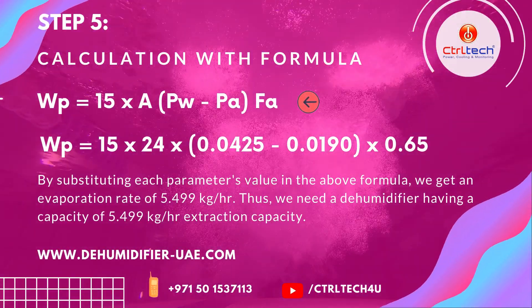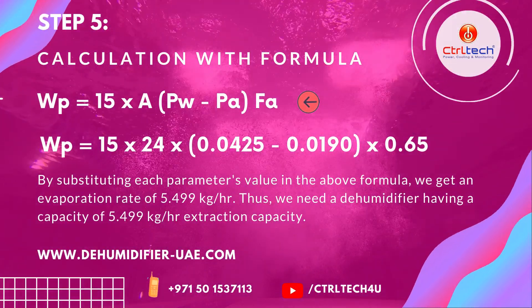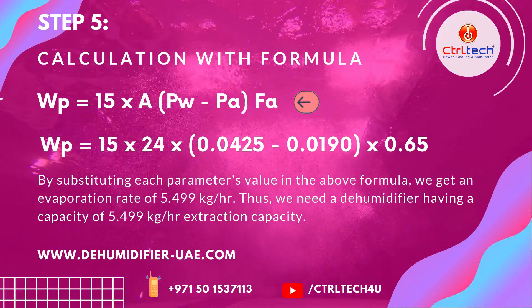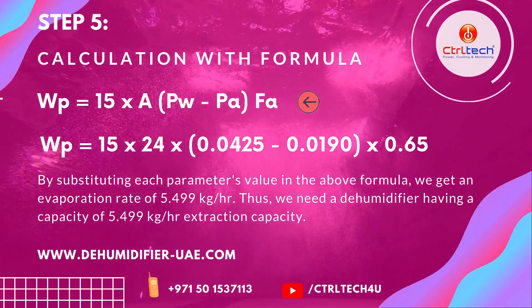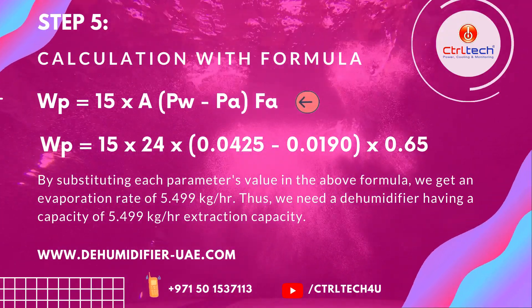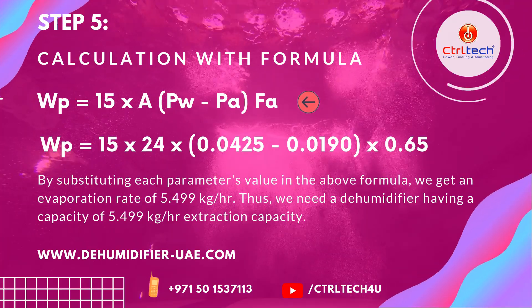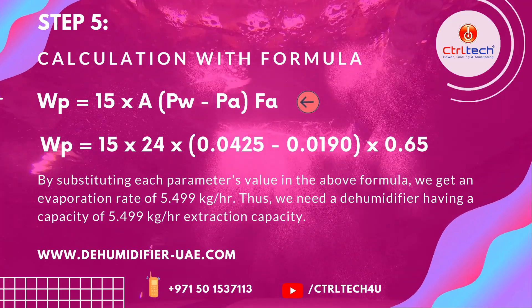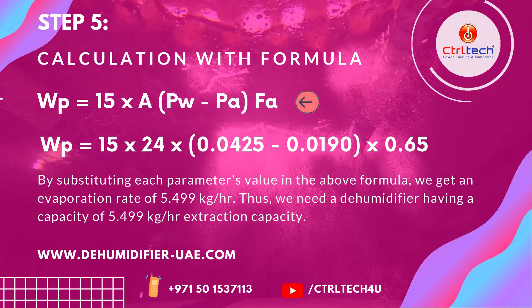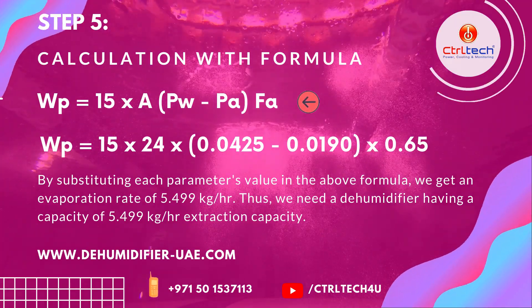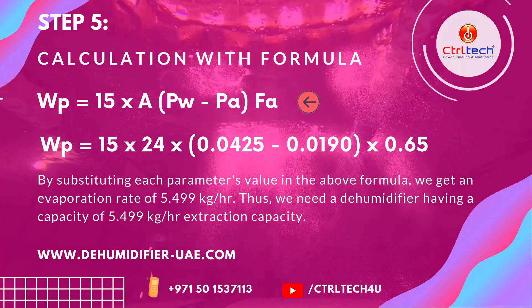By substituting each parameter's value in the above formula, we get an evaporation rate of 5.499 kg/hr. Thus, we need a dehumidifier having a capacity of 5.499 kg/hr extraction capacity.